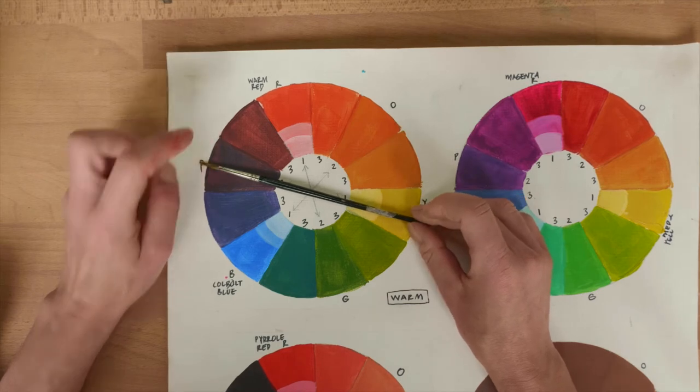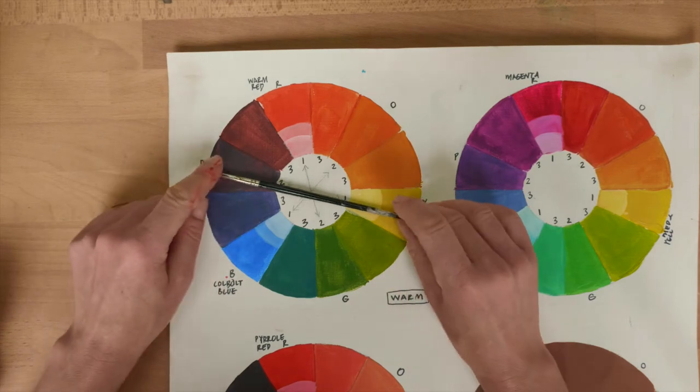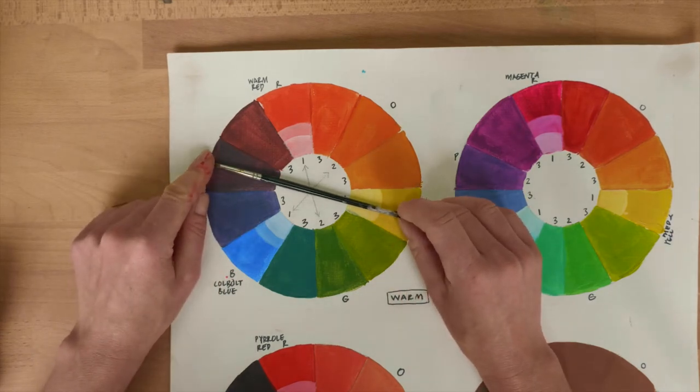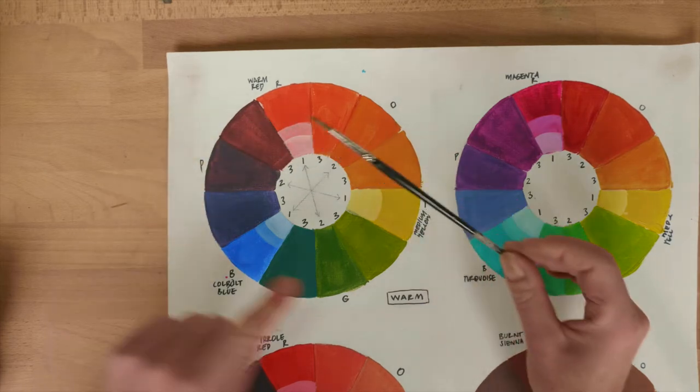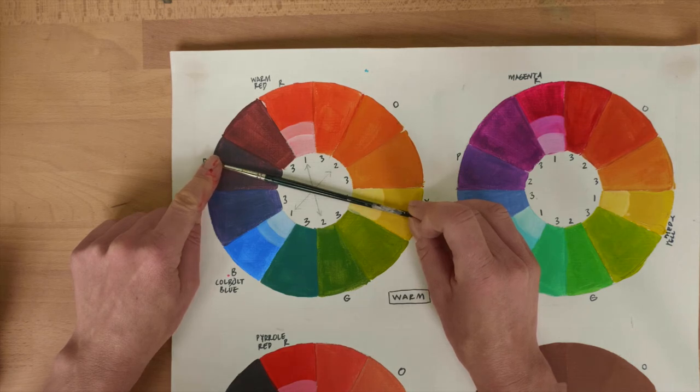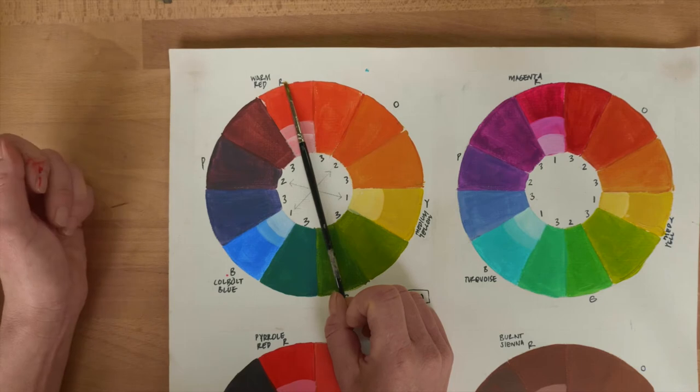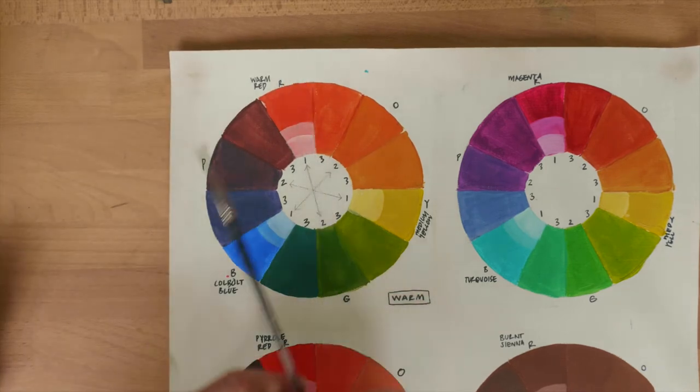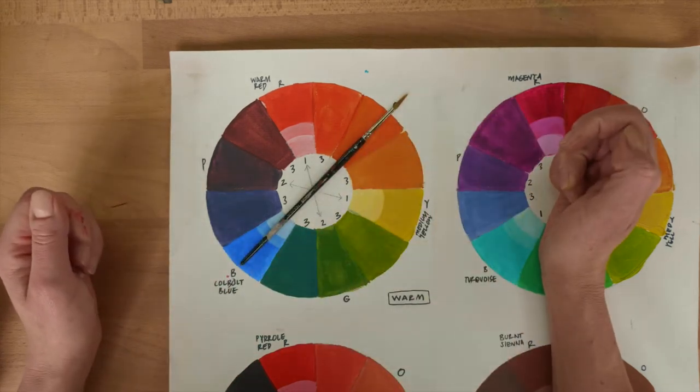If we look across, this is where the excitement happens. We can find our complementary, our opposite, or our contrasting—it all is basically the same thing. So yellow is purple, so they're contrasting, opposite, and complementary. Our red and our green, so they're opposites, complementaries, and contrasting. And the same here with our blue and our orange.